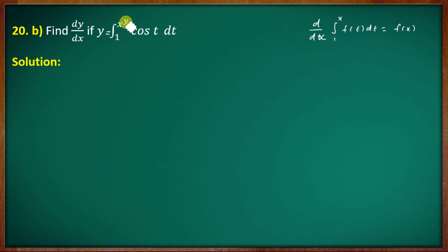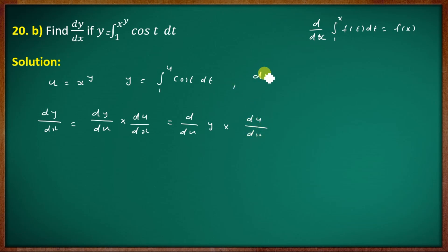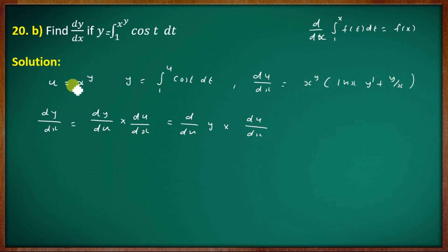Now the second question: find dy by dx. Here x raised to y, with the substitution where y equals the integral from 1 to u of cos dt. Then dy by dx equals d by dx, so differentiating: y equals x raised to y into log x, times y dash plus y by x equals x raised to y. Using d by du of the integral from 1 to u of cos dt, times du by dx.